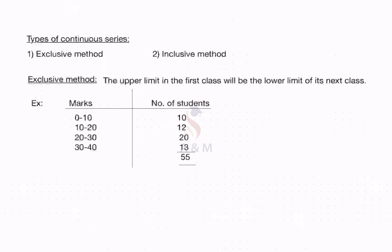We have understood the various terms in continuous series. Now let us discuss two types of continuous series: exclusive method and inclusive method. In the exclusive method, the upper limit of the first class will be the lower limit of its next class. For example, the upper limit of the first class — that is 10 — is the lower limit of the next class. Likewise, the upper limit 20 is the lower limit of the third variable. This is the exclusive method.